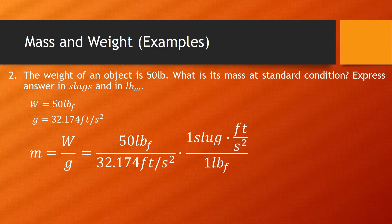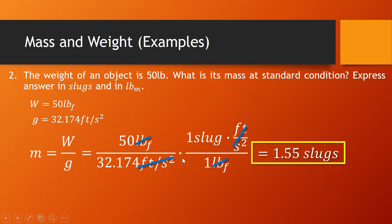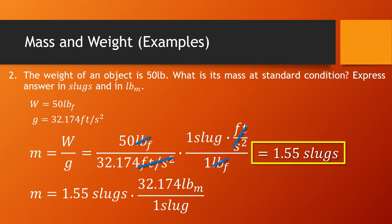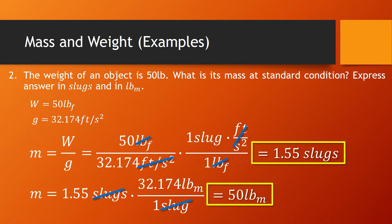Converting to obtain the answer in slugs, we use the conversion unit: 1 slug·ft/s² = 1 pound-force. Canceling out pound-force and feet per second squared, the answer is 1.55 slugs. Then converting slugs to pound-mass using 32.174 pound-mass per slug, the slug cancels out, giving us a final answer of 50 pound-mass.